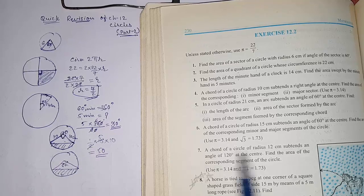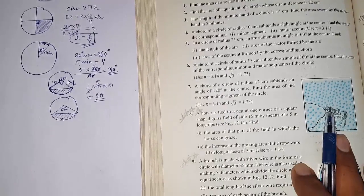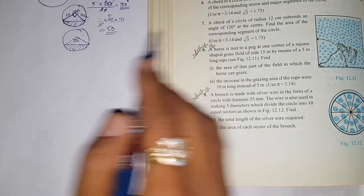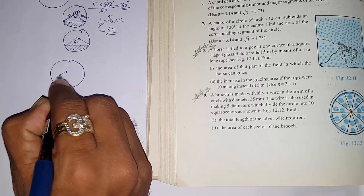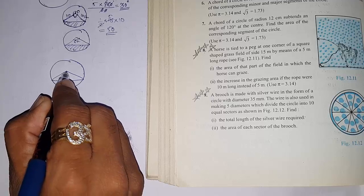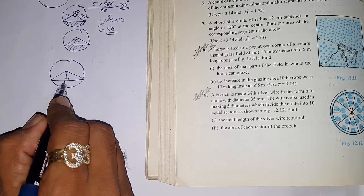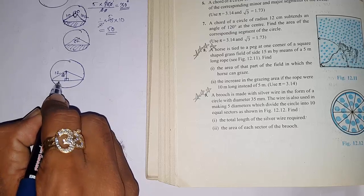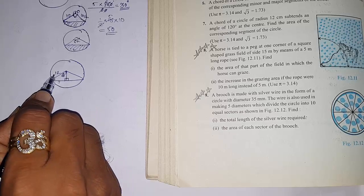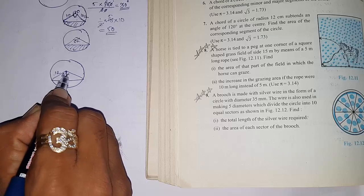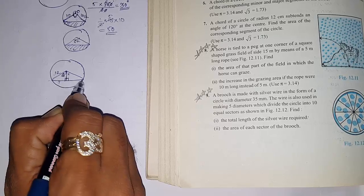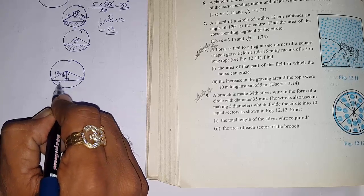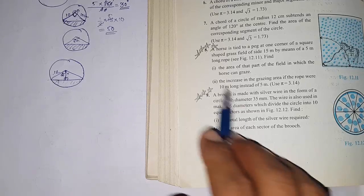Question 6: A chord of a circle of radius 12 cm subtends an angle of 120° at the center. Find the area of the corresponding segment. When 120° is given, draw a perpendicular to form a right-angle triangle. The half-angle is 60°; with hypotenuse = 12 (radius), use sin 60° and cos 60° to find the height and base. Then: minor segment = sector area − (1/2 × base × height).